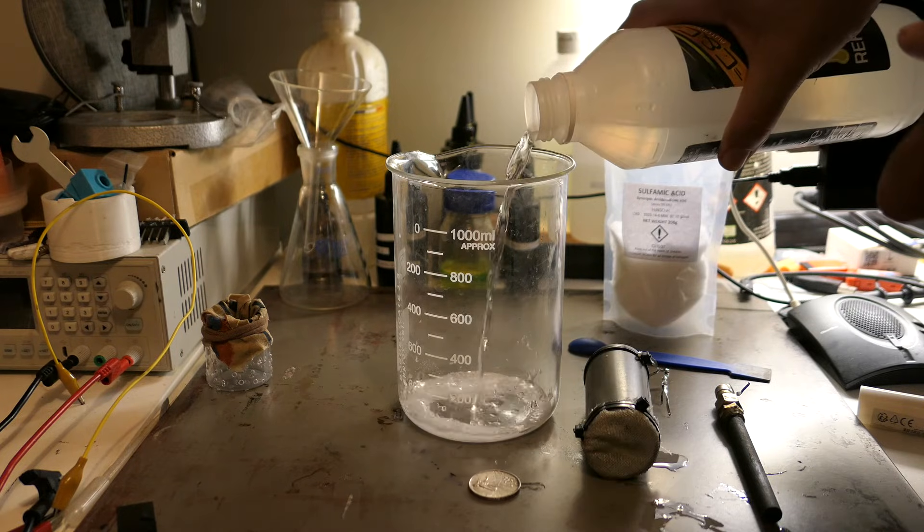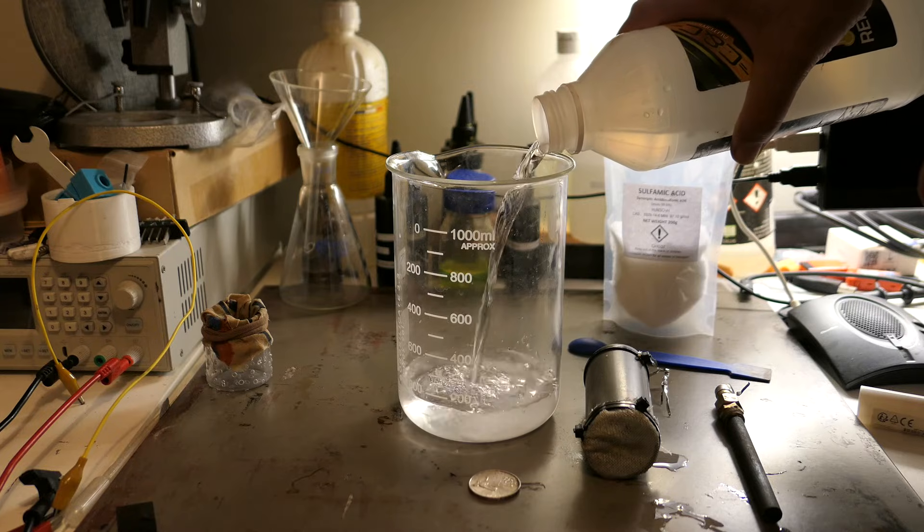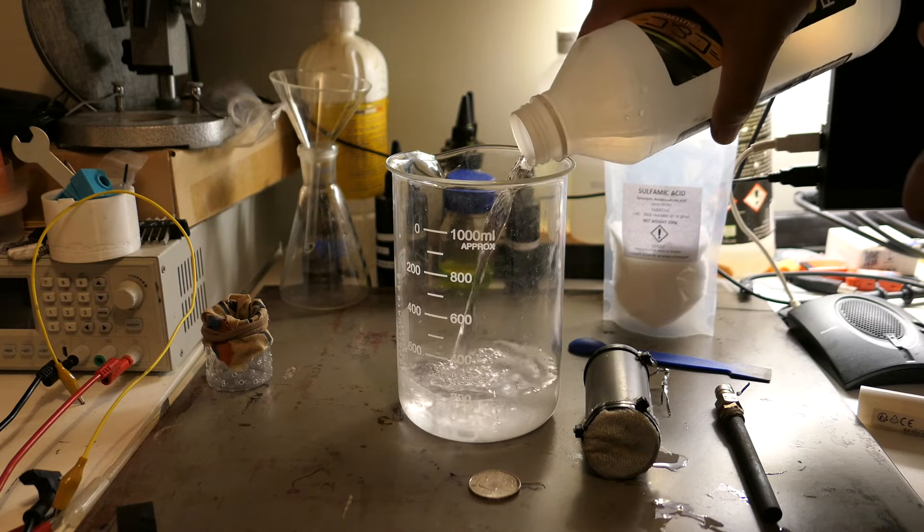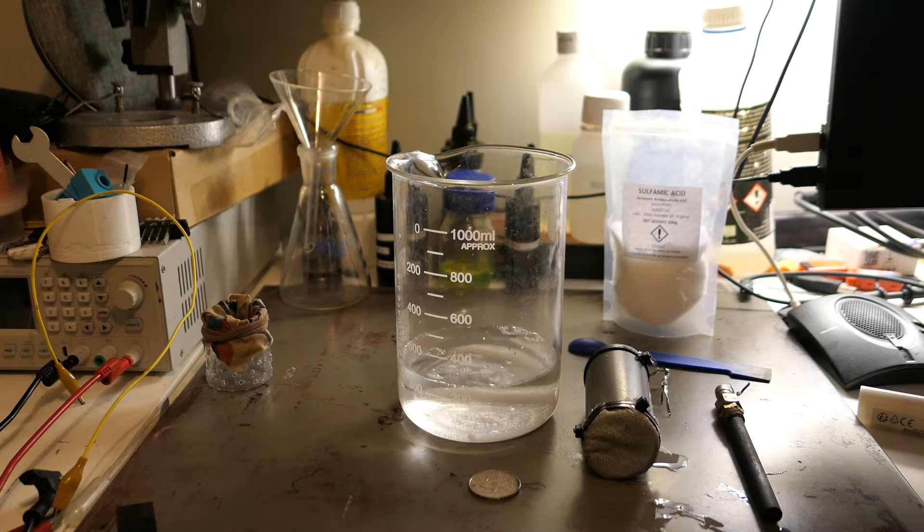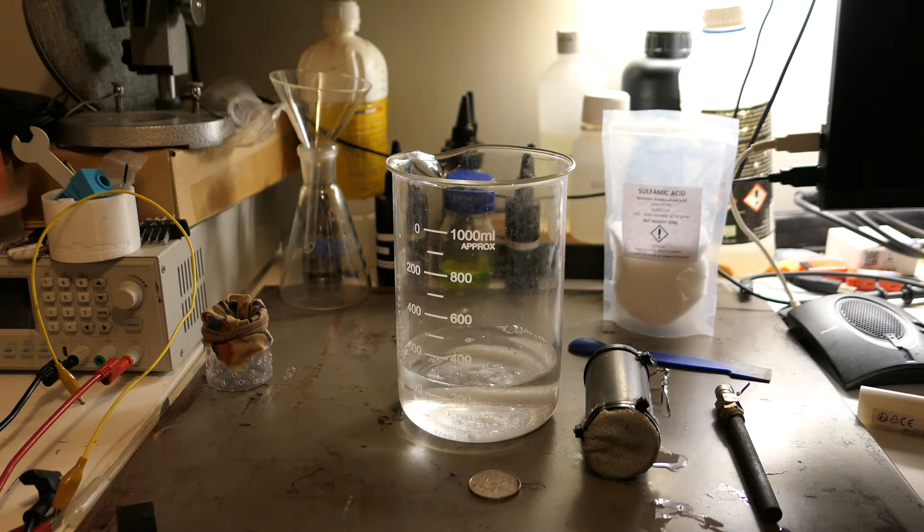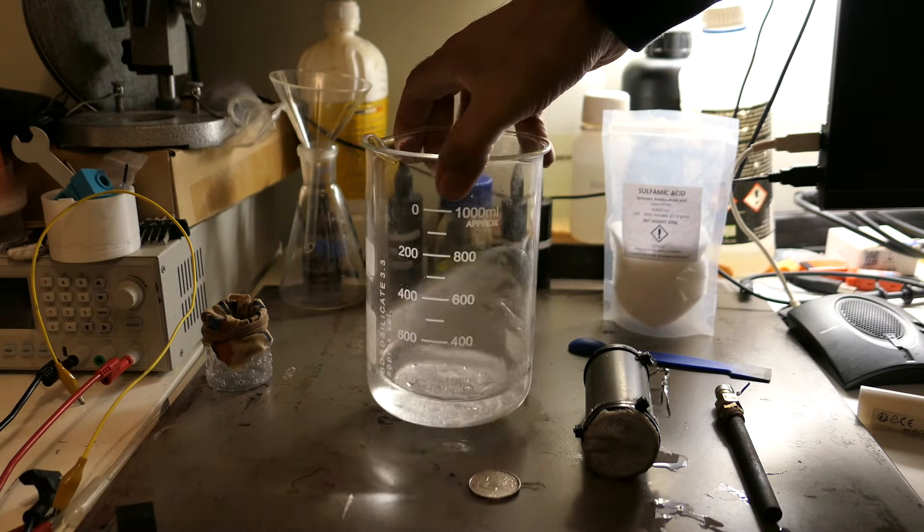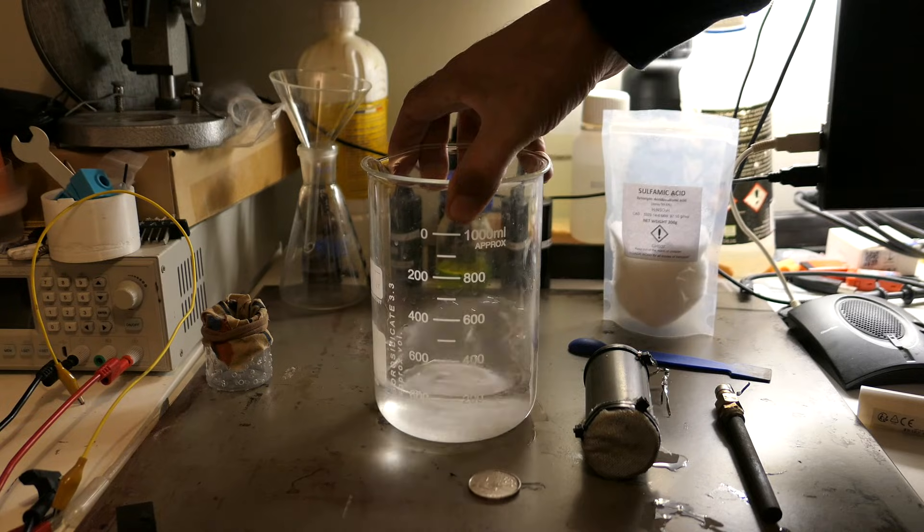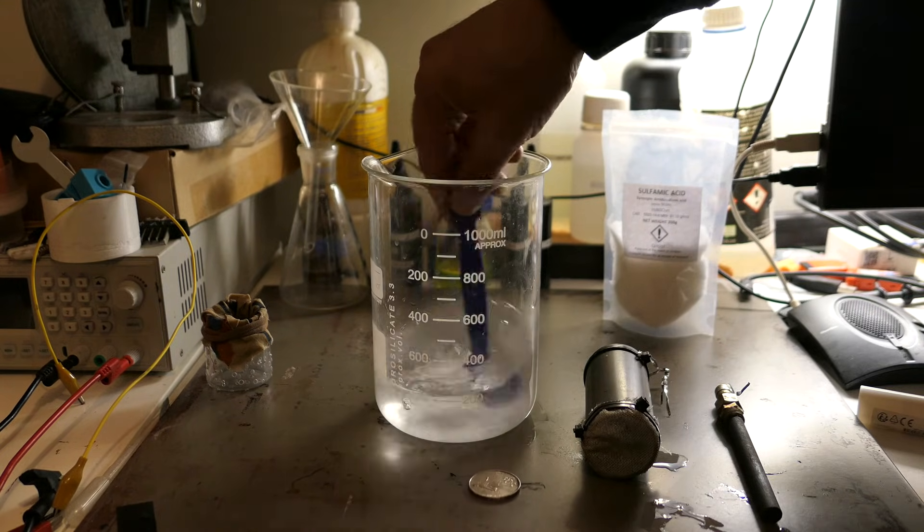But why does only silver deposit, and not other metals like copper? It's all about the reduction potential of each metal. Silver has a higher reduction potential compared to metals like copper, meaning it will preferentially deposit on the cathode, while copper and other impurities either remain in solution or fall away as sludge. This is how we get pure silver at the cathode in the traditional process.